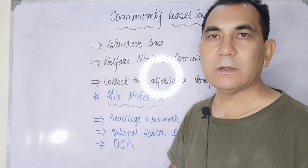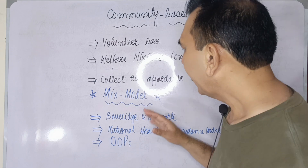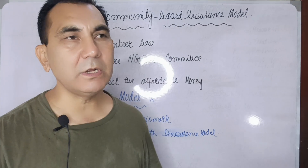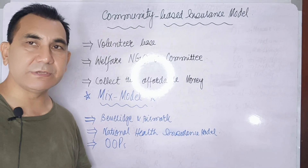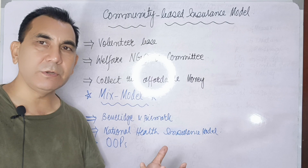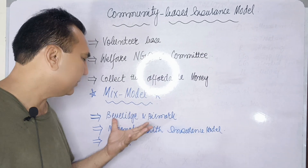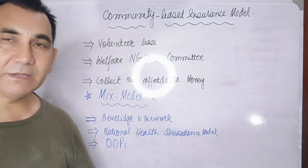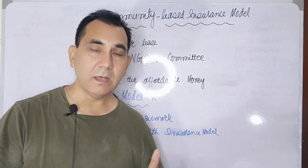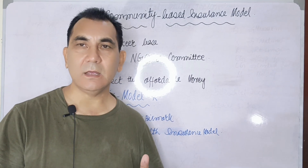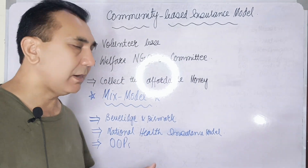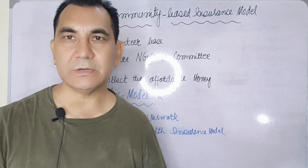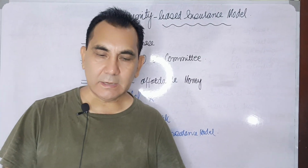Another model is called the mixed model. In this model, some community people are insured by the Beveridge model or the Bismarck model, some are getting healthcare access at the time of expenditure from the national health insurance scheme, and some people are paying by their own pocket through out-of-pocket spending.